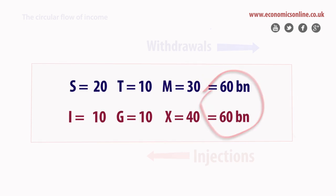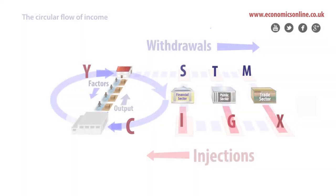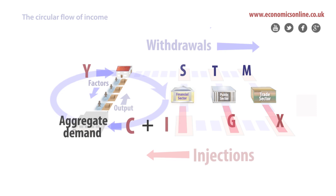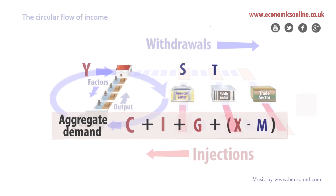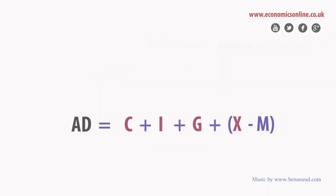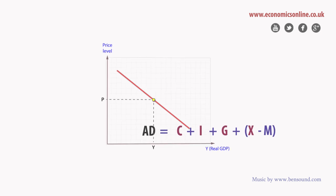Aggregate demand can be understood from the circular flow model and is the sum of household spending, plus investment, government spending, and net exports. In total, aggregate demand is inversely related to the price level, with a typical aggregate demand curve sloping downwards.